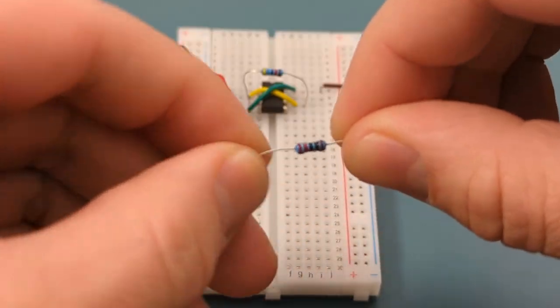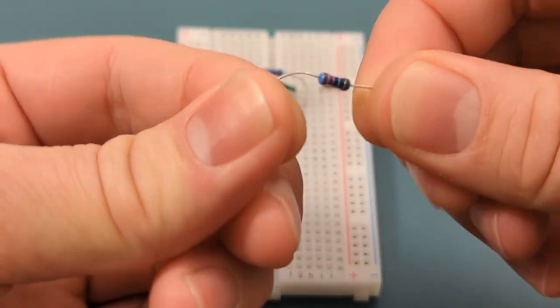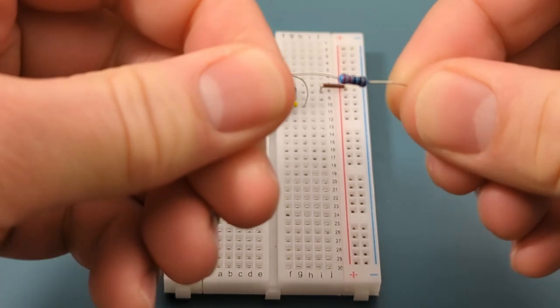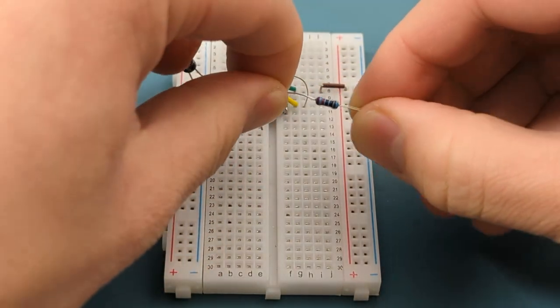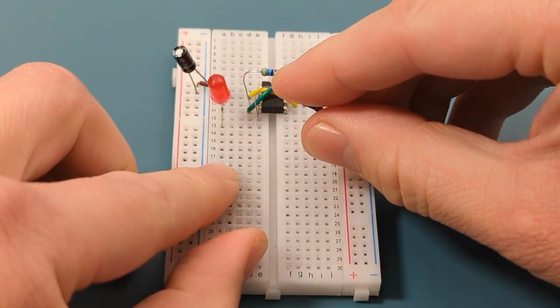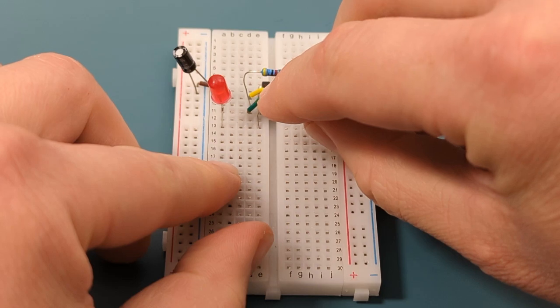Bend the ends of a 220 ohms resistor. Insert one end of the 220 ohms resistor into the same row as the red LED and the other end into the positive rail.